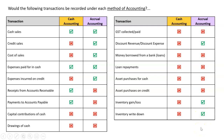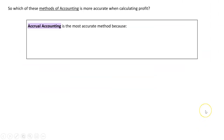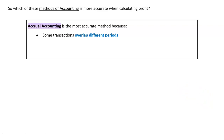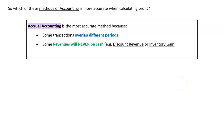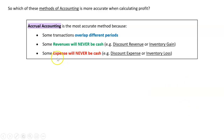Looking across all those transactions, some have the same treatment under both methods, but accrual accounting records more things — it captures items that should be recorded that cash accounting misses. Accrual accounting is the more accurate method because some transactions overlap different periods, and there may be a difference between when a transaction occurs and when money is received or paid. Also, some revenues and expenses will never involve cash, such as discount revenues, discount expenses, or inventory gains and losses.